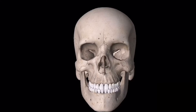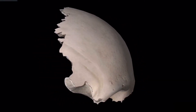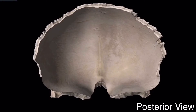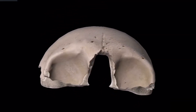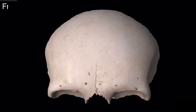Now let me isolate the frontal bone. This is the frontal bone with the interior view, this is the lateral view, this is the posterior view, this is the superior view, and this is the inferior view of the frontal bone.